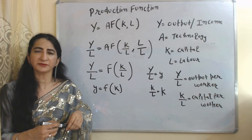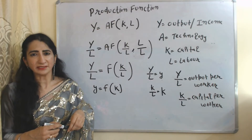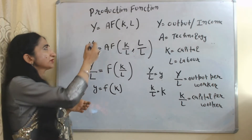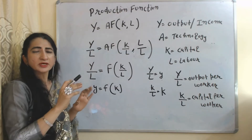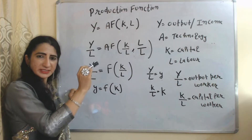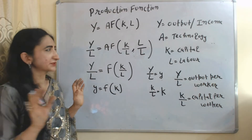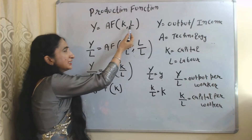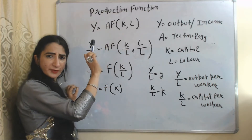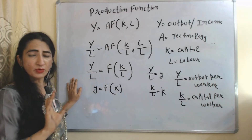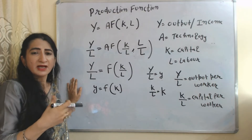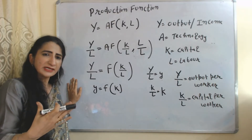According to Solow, we can achieve a steady growth rate with the help of technology, capital, and labor. This is the equation of the Solow production function: Y = f(A, K, L). In this equation, Y is output or income, A is technology — and here we assume technology is constant — K is capital, and L is labor. F simply describes a function.